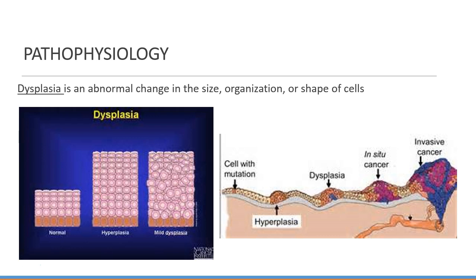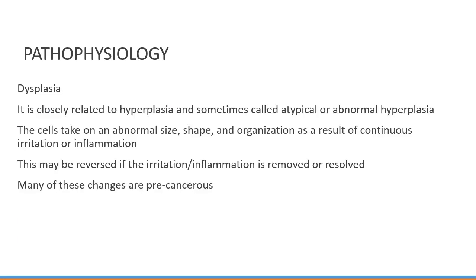Dysplasia is a form of adaptation closely related to hyperplasia, sometimes referred to as atypical or abnormal hyperplasia. In this kind of adaptation, cells take on abnormal size, shape, or organization as the result of ongoing irritation or inflammation. Sometimes this can be reversed if the causative factor is removed. This type of cellular adaptation is usually a cause for concern because most of the time it leads to a precancerous condition that can progress to a malignant formation.